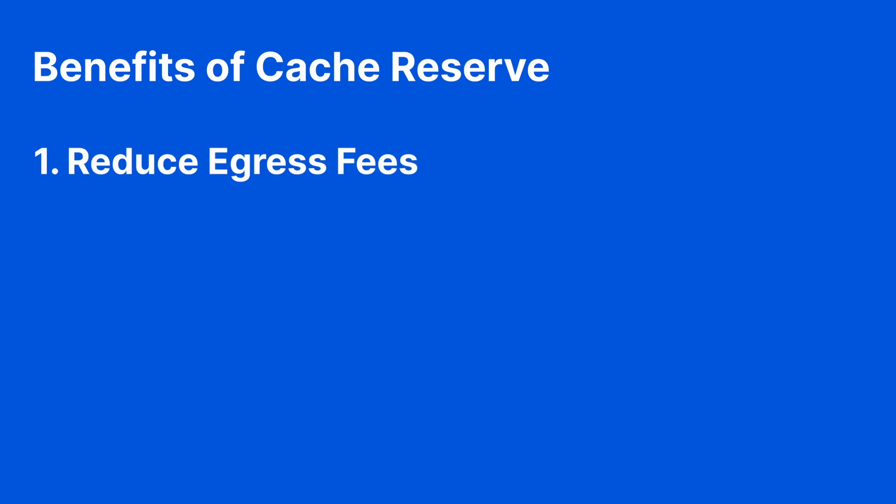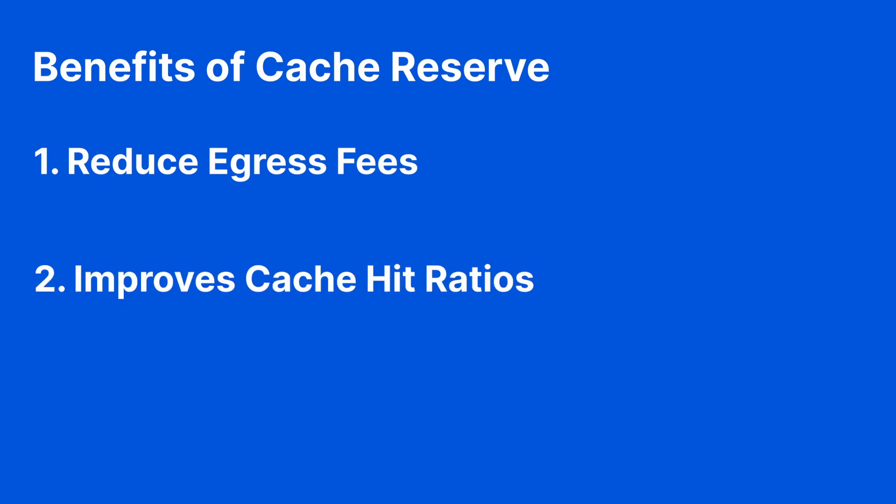Here are some benefits of Cache Reserve. First, it helps you reduce your egress fees. By reducing the need to request assets from the origin server, Cache Reserve can help you save money on egress fees. It also helps you improve cache hit ratios — by persistently storing cachable data, Cache Reserve can improve cache hit ratios.